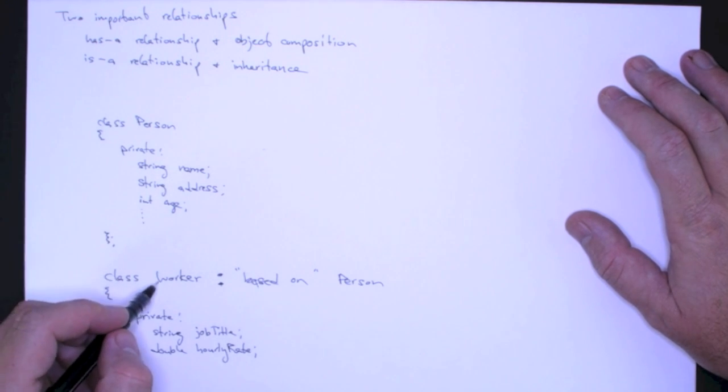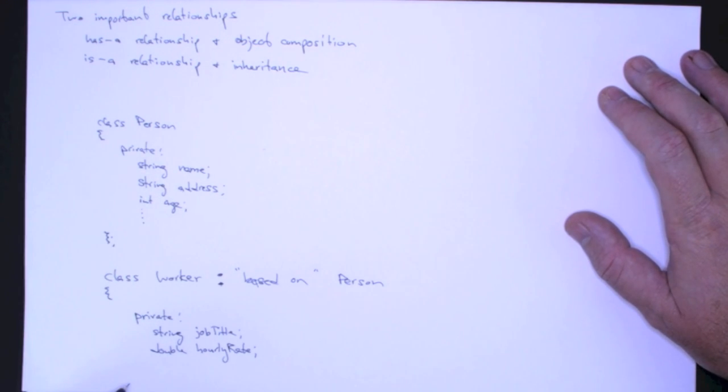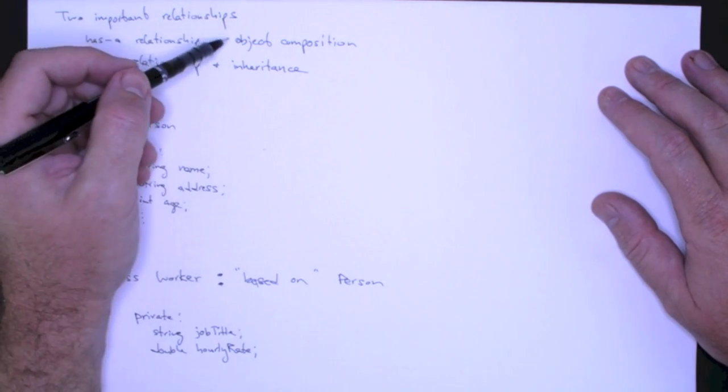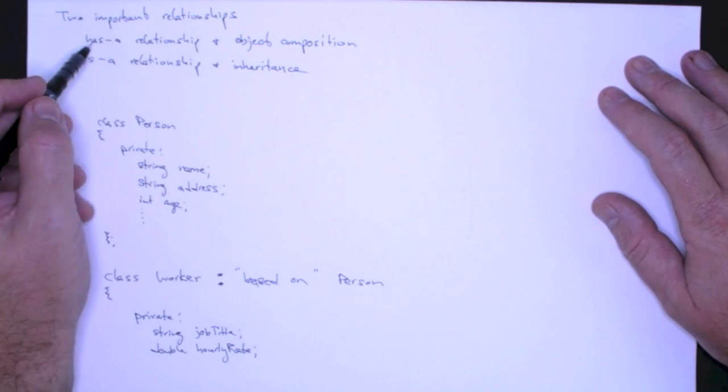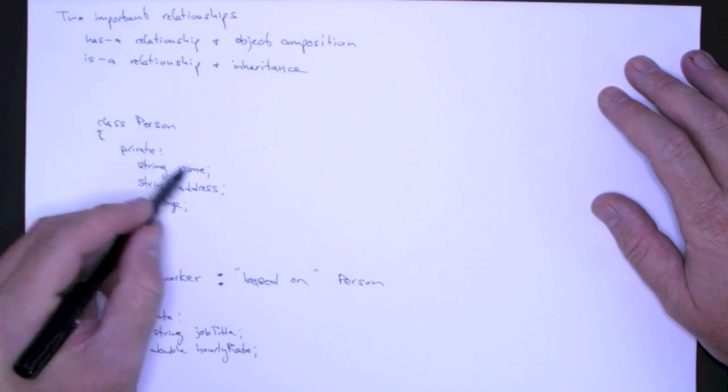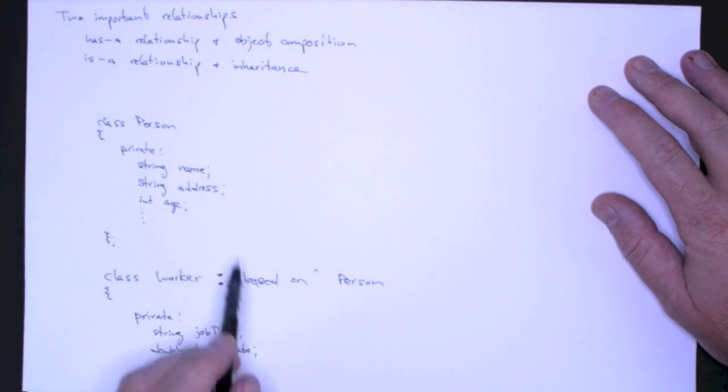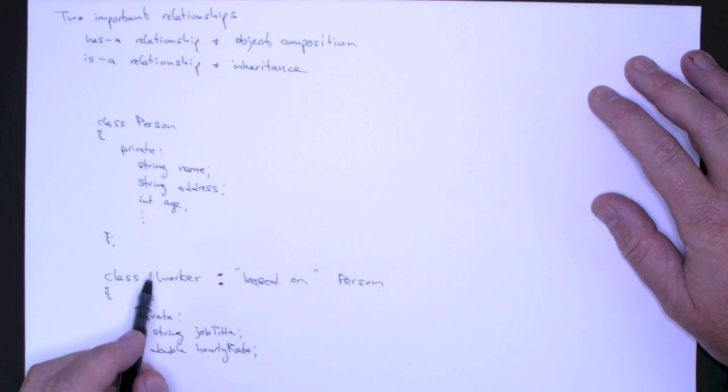This really illustrates these two different relationships. We can say that a worker is a person. We would never say that a worker is a job title or a worker is an hourly rate, but workers have a job title and they have an hourly rate. In object-oriented programming, the way we capture the has-a relationship is using object composition, which is just writing those properties and declaring those private data members in the private section. But the is-a relationship, where you say a worker is a person, is a different type of relationship, and we implement that using inheritance.